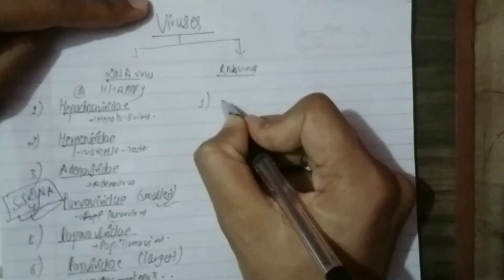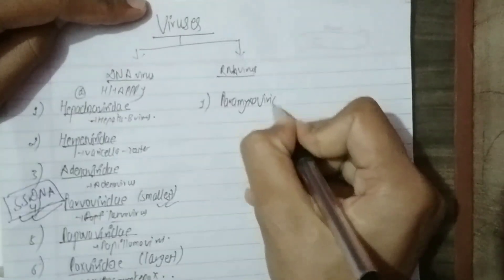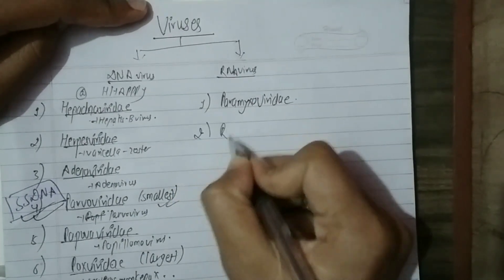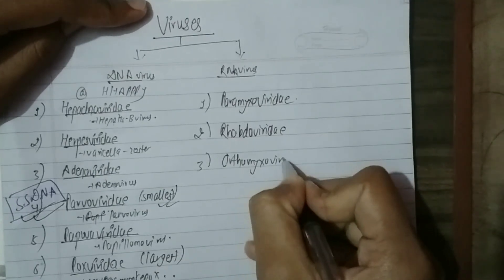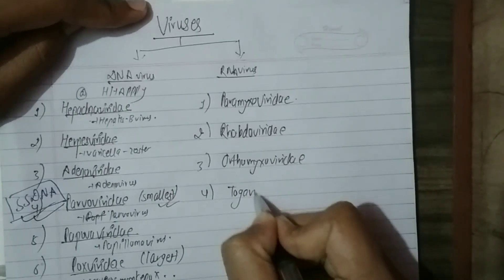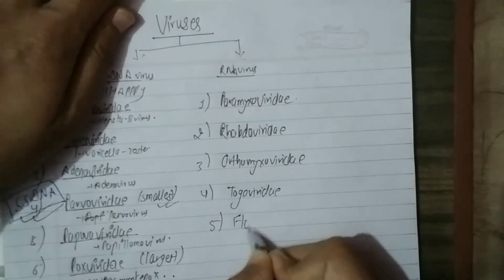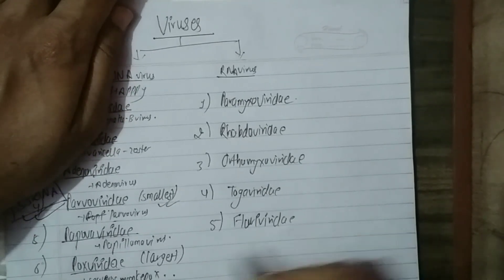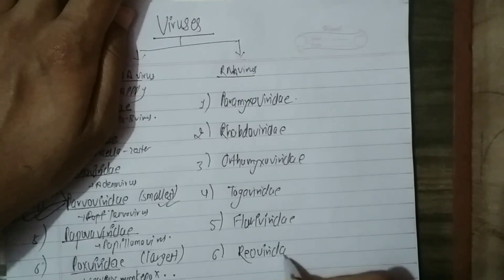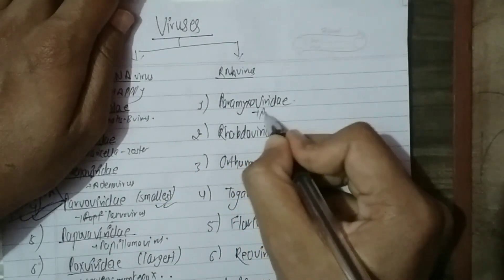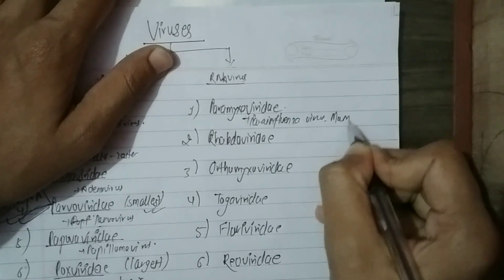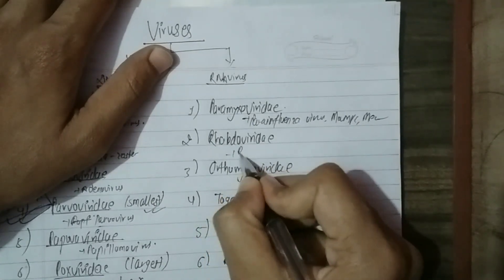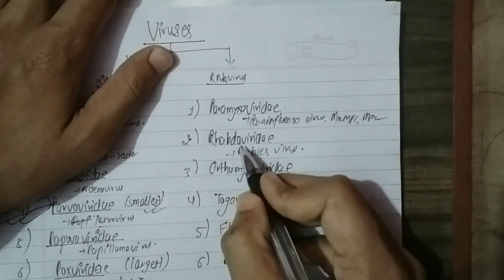Now for RNA viruses: number one is Paramyxovirus — be ready. Number two is Rhabdoviridae. Number three is also Paramyxo — be ready. Number four is Calicivirus. Number five is Flavivirus. Number six is Reovirus. Number seven is Picornavirus — be ready. Examples: para-influenza virus, mumps virus, measles virus, rabies virus — that is a rabid virus.